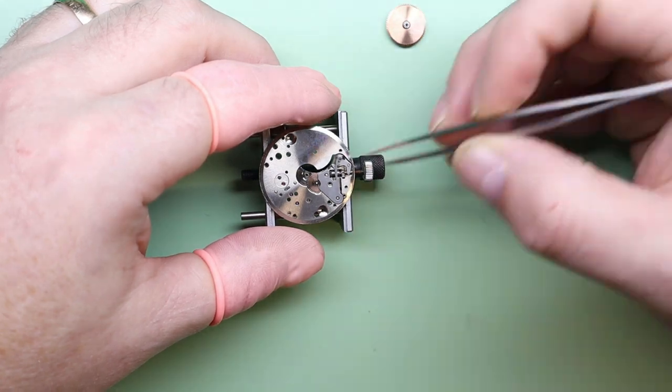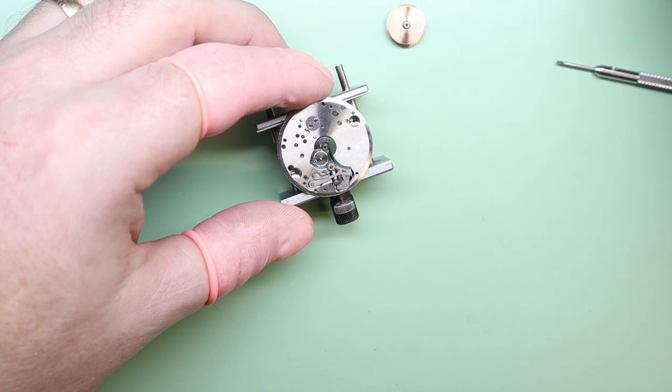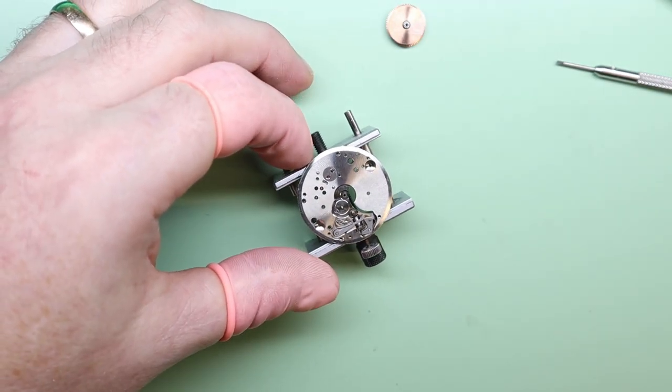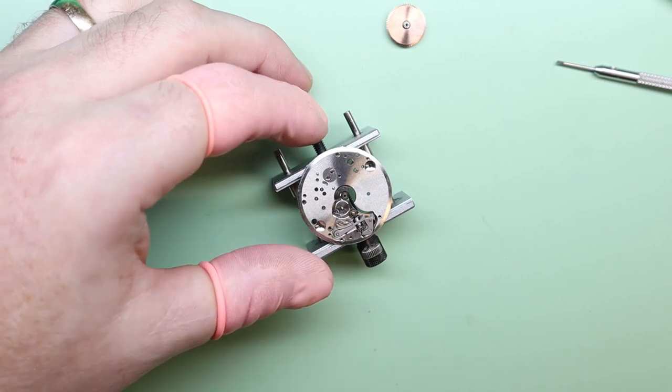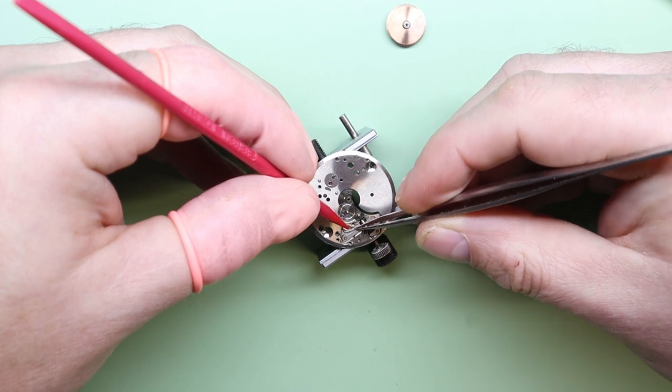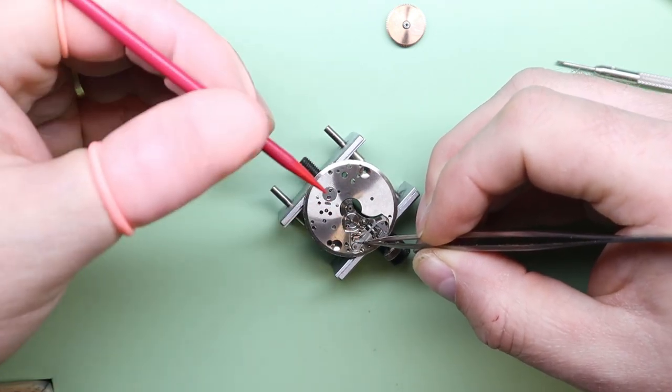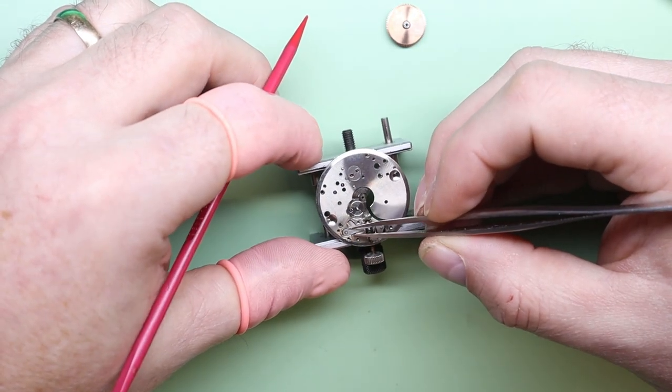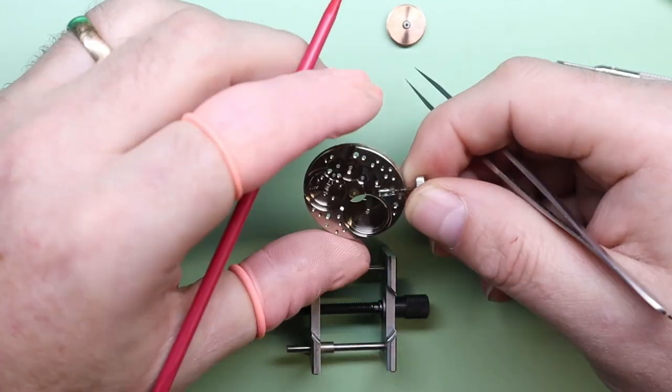Then we remove the minute wheel, the setting wheel, and then we're going to move on to the yoke spring. We're going to release tension from the yoke spring. Whenever you're doing this, it's always best to use a piece of pegwood or a stick like this. This is a Bergeon pressure stick, and you can just hold the spring in place whilst you release the tension, and that way the spring is not likely to fly off into the distance. With the spring gone, we can then safely remove the yoke.